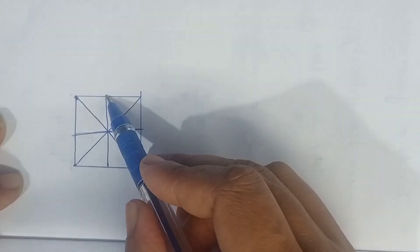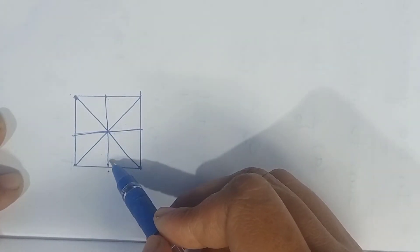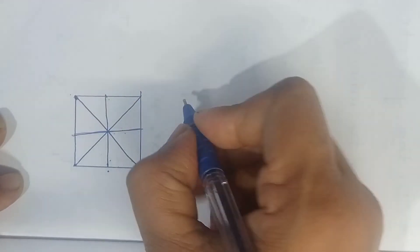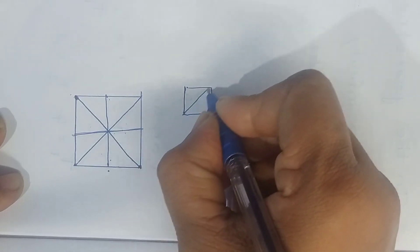Suppose if you draw a line like this, this line will divide the square into two equal halves. See here, like this.